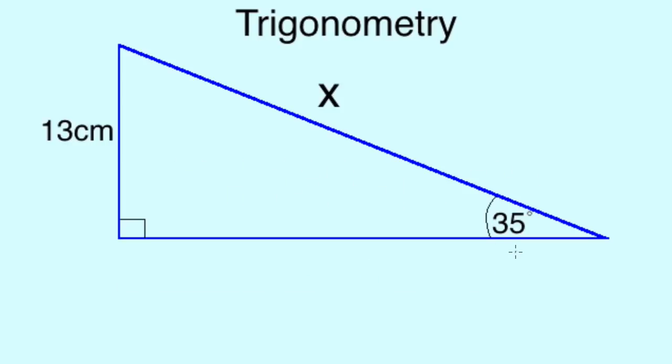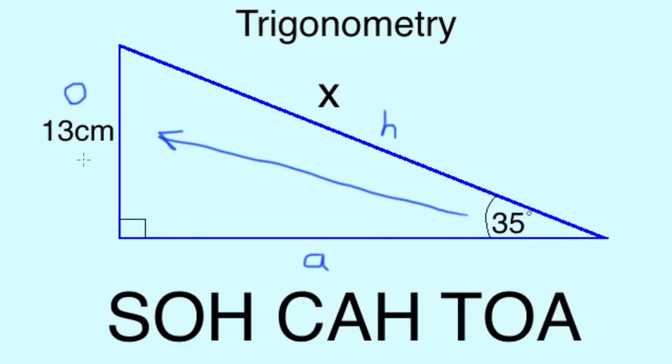Now we've learned how to label the triangle and draw up formula triangles, we can move on to our first example. In this example, we can see our angle has been labelled for us at 35 degrees. So, we can label our longest side H, our side touching the angle A, and finally the opposite side O. From that we can see that the side with the measurement of 13cm is our opposite, so O. And the other side in question labelled X is our hypotenuse.